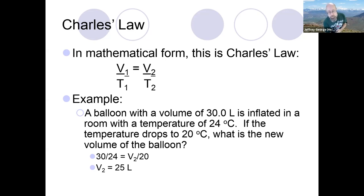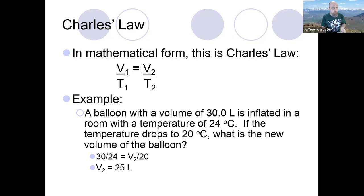If volume increases, then temperature can also increase, and most importantly, if I increase the temperature of a gas, then the volume of that gas will also increase — which makes sense. We've talked about that before: if I heat a gas, it will expand. V1 and T1 are the initial conditions, V2 and T2 are the final conditions, and we can use this formula to solve for any of the variables. You have to be given three of the four values, and then you solve for the fourth — it's just algebra.